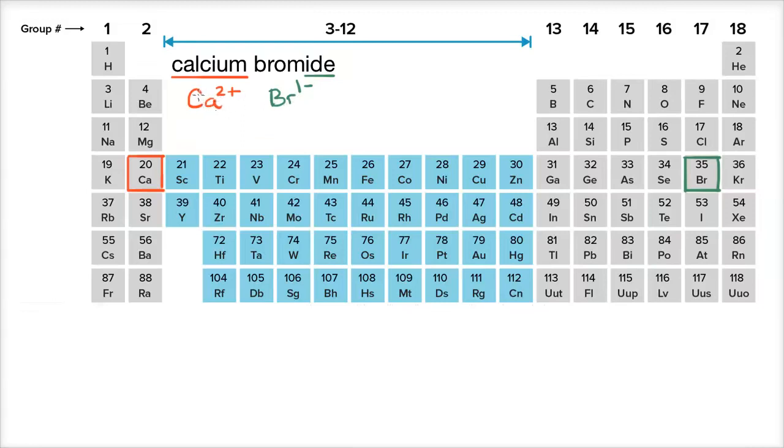The charge of the calcium cation is going to cancel out with the bromide anions. So how is that going to happen? Well, you have two plus here, you only have one minus here. So you're going to have to have two bromides for every one of the calcium ions.